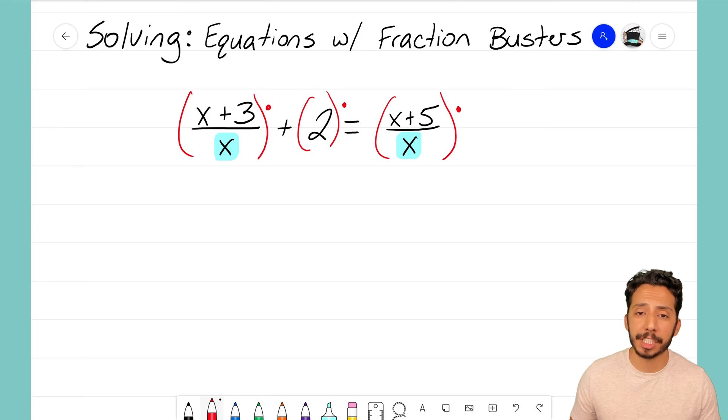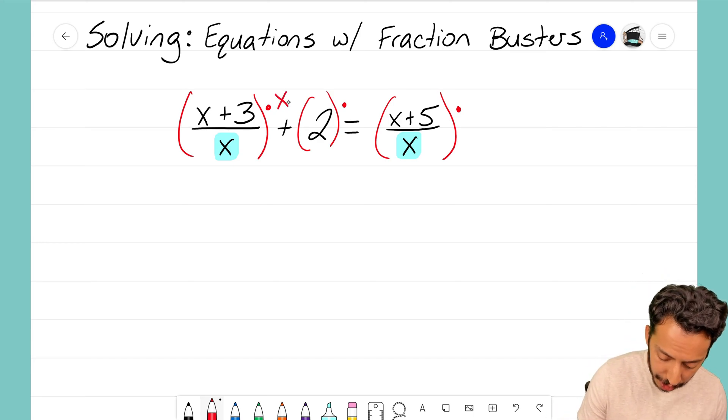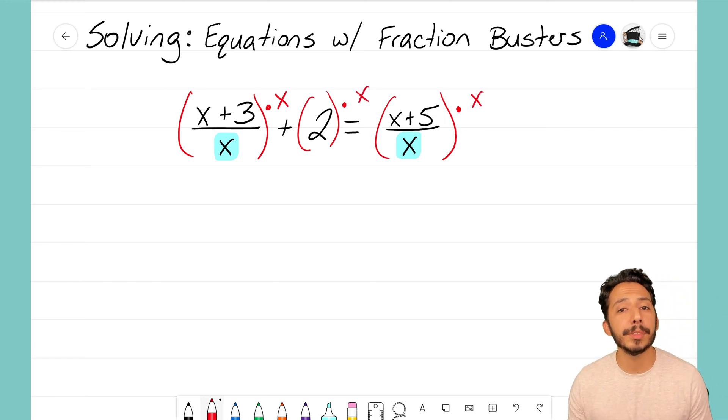It's in the denominator position. We're trying to get rid of x, so I think the best way for us to do that, since they both match, is to multiply each term by x. Now that's something we haven't done before. We've always multiplied by a number, but we can multiply by x.